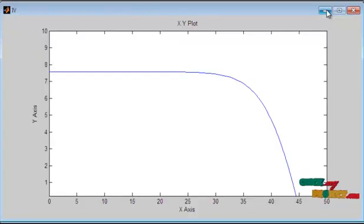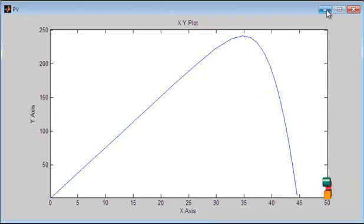First one is the IV characteristics obtained from the solar panel. The IV characteristics is drawn between the solar current and solar voltage. And next one is the PV characteristics. This PV characteristics is drawn between the photovoltaic power and voltage from the photovoltaic panel.